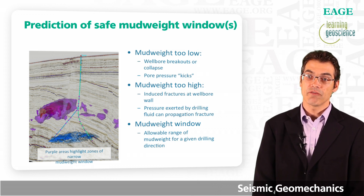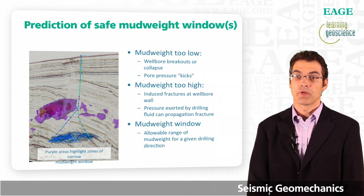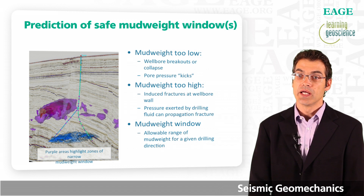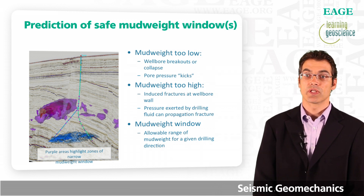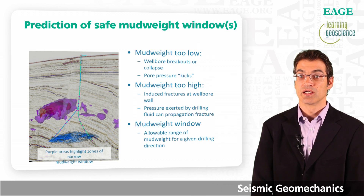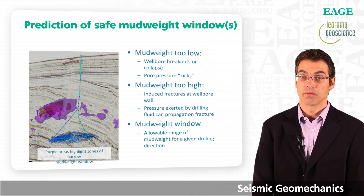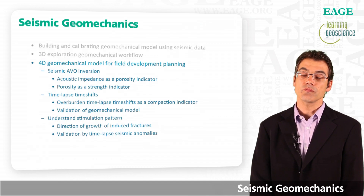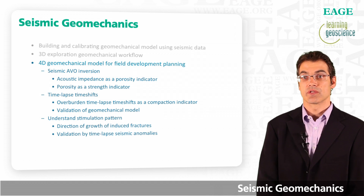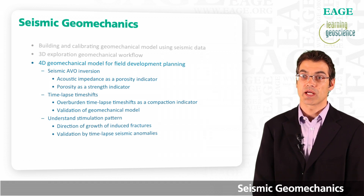Color coded in purple are geobodies of narrow mud weight window — light purple for a narrow window and dark purple for a closed mud weight window. We can see that on the left side of the fault it is much more difficult to drill than on the right side. So if I have a choice of where to place a well in an exploration setting, I would not want to place it on the left side of the fault. This summarizes the 3D exploration geomechanical workflow: taking seismic data from acquisition through processing and inversion to building a geomechanical model and identifying safe drilling trajectories and mud weights.